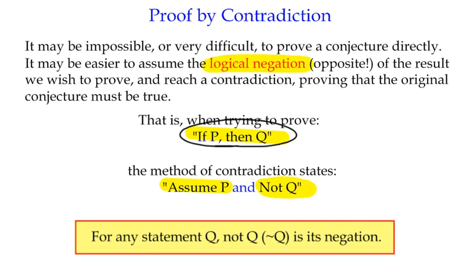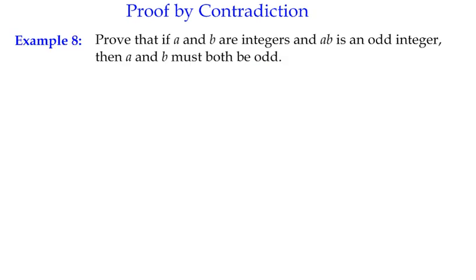So it works quite well for certain proofs. Some proofs that we're going to try, you could do a direct proof of, but I'm going to show you anyway, how we would go through the process of proof by contradiction.